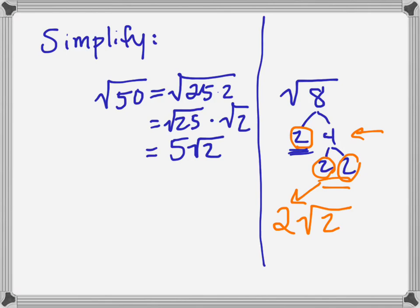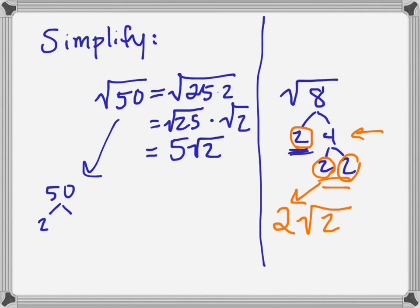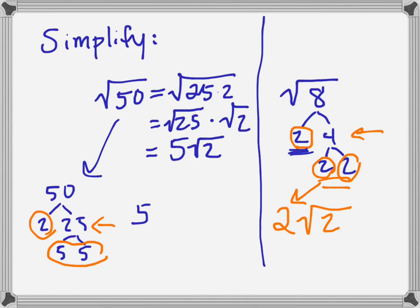Going back to the first problem — if I didn't know that 25 was a perfect square, I could have also factored 50. Maybe I know that's 2 times 25, and 25 is 5 times 5. Every time I have a pair of prime numbers — 5 times 5 — that indicates a perfect square I can take the square root of. So the square root of 25 is just going to be one of those 5s. Then I have one remaining 2 that's prime and can't be square rooted, giving me 5 square root of 2.